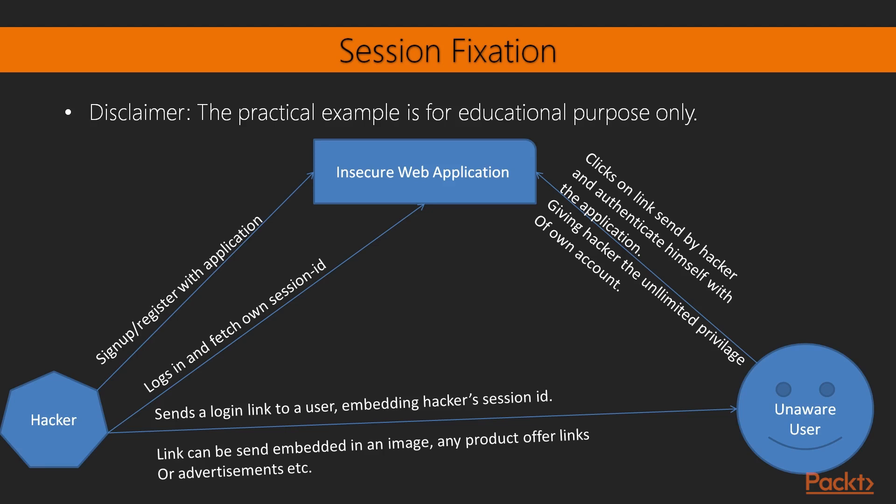The first application we created is the simplest Spring MVC web application. The scenario is: the hacker logs into the application and fetches the session ID. He can obtain the session ID using his own tools, proxies, or anything else, because the session ID is stored in cookies. The hacker then sends a link with the embedded session ID to an unaware user — even by embedding this link in an image.